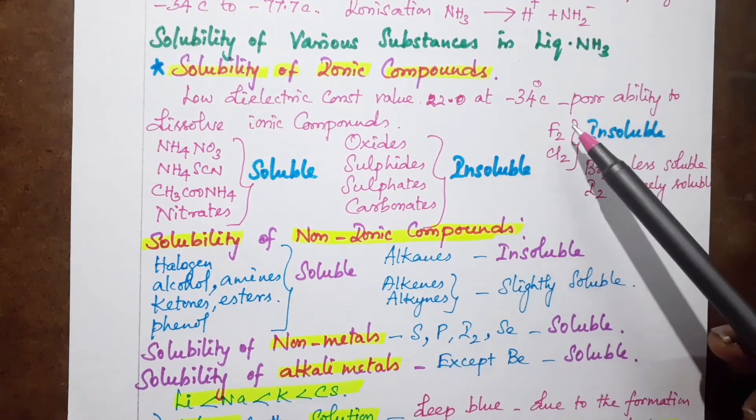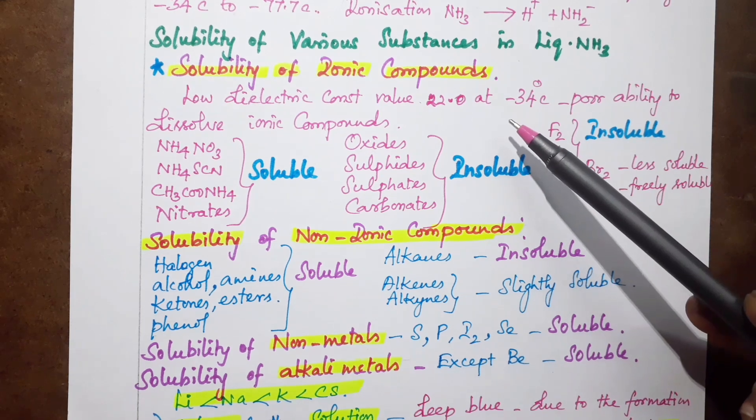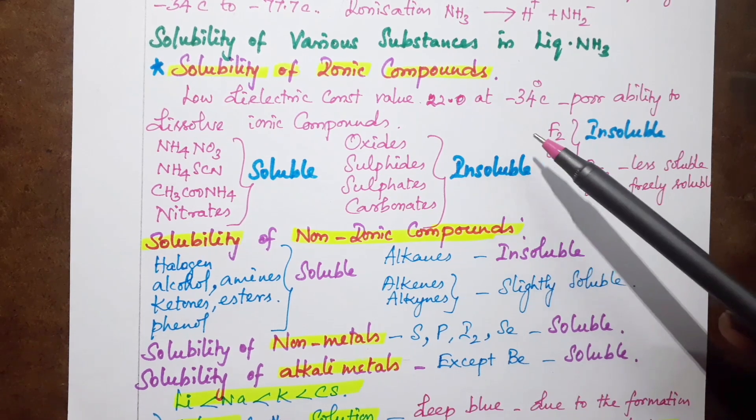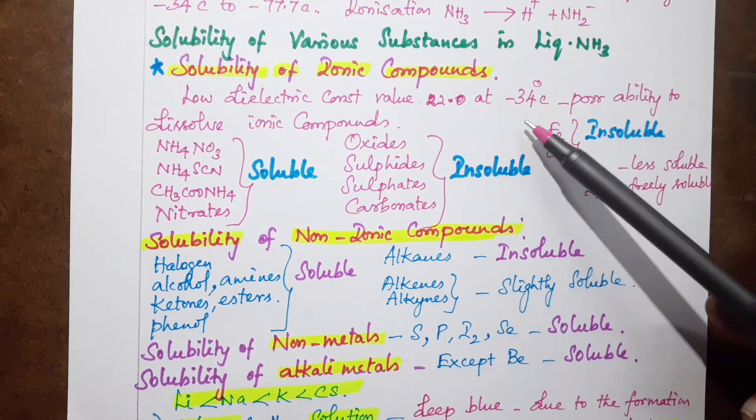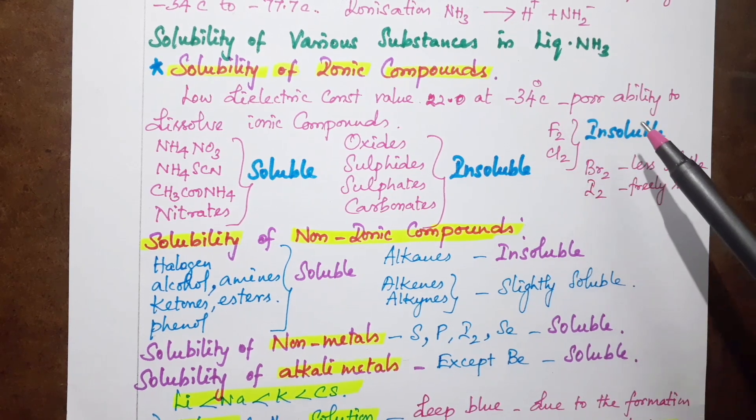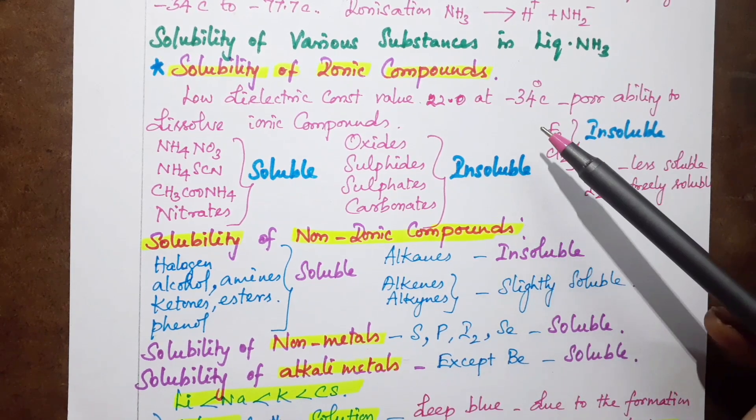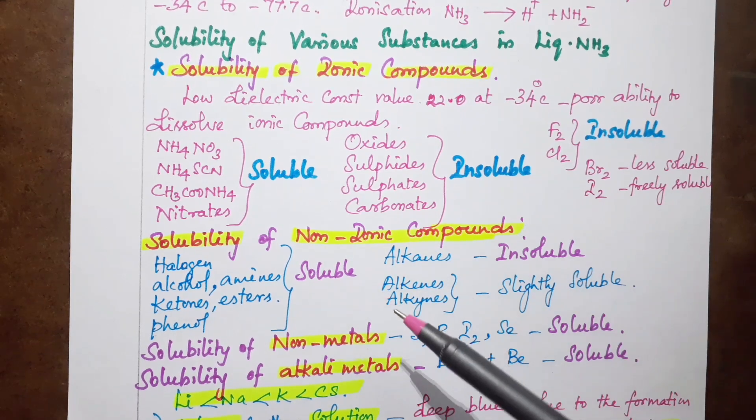The ammonia dielectric constant value is 22.0. The solubility at minus 34 degrees shows poor ability to dissolve ionic compounds. If ionic compounds dissolve, it is a little bit more difficult. What are the soluble ionic compounds?